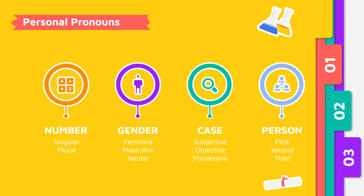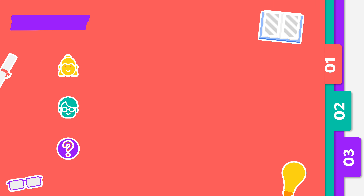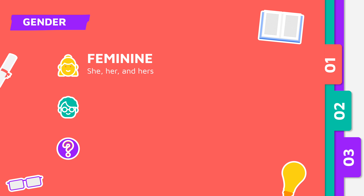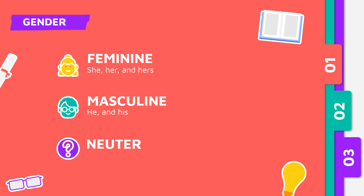Number refers to singular and plural. Gender refers to feminine, masculine, and neuter. She, her, and hers are feminine pronouns. He and his are masculine pronouns. It is a neuter pronoun.